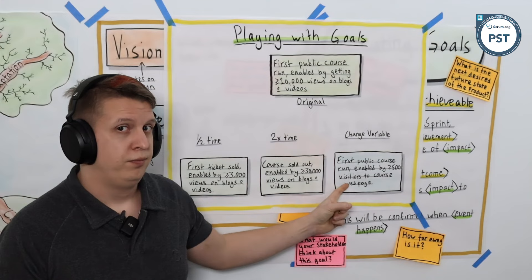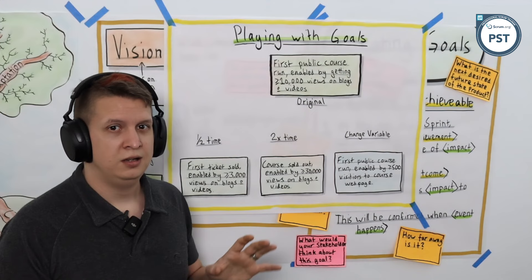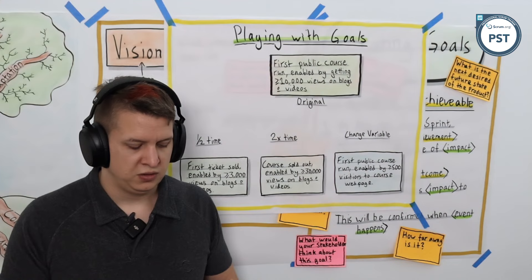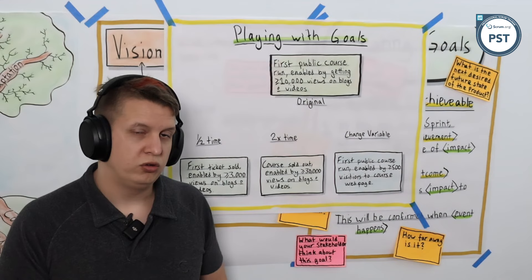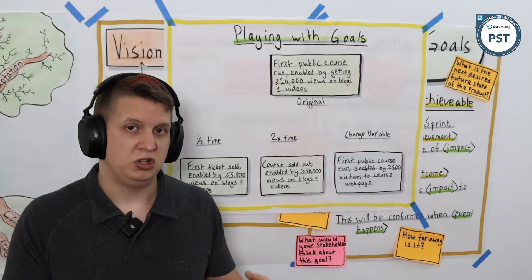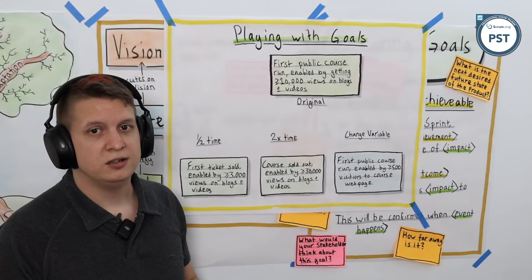And all we did was tweak a single variable, and by doing so we could have changed the entire product backlog. So how you construct your goals, be it the sprint goal or the product goal, will drastically influence the product or sprint backlogs, and it will also influence heavily the kinds of experiments, the kinds of work you're doing to achieve those goals. These goals necessitate blogs and videos being made.